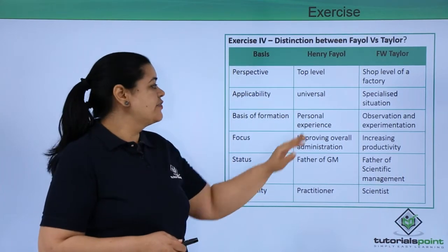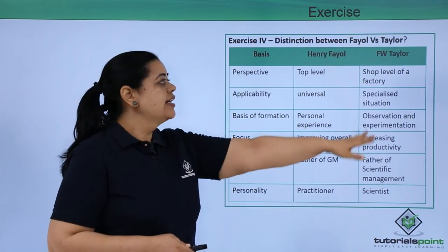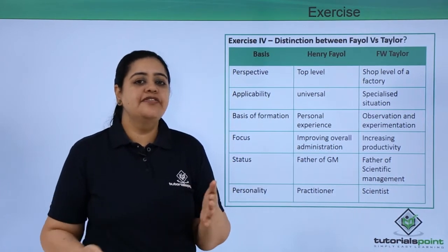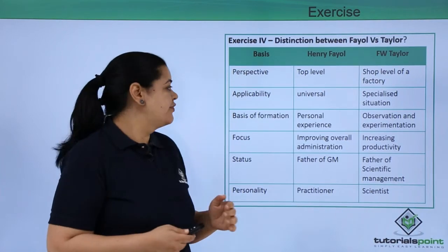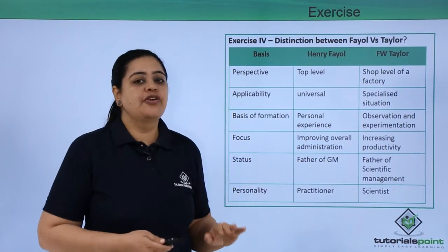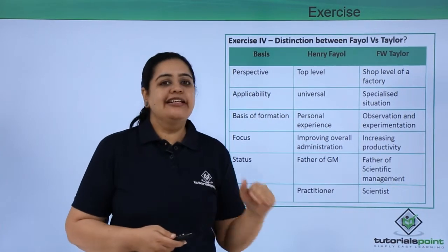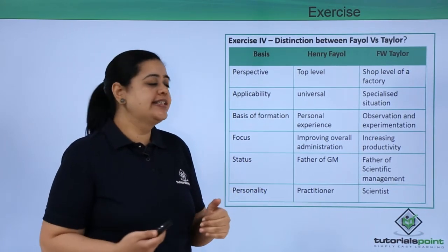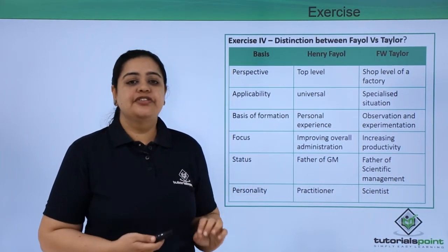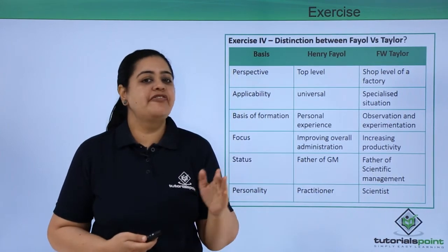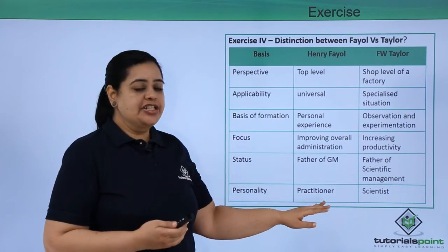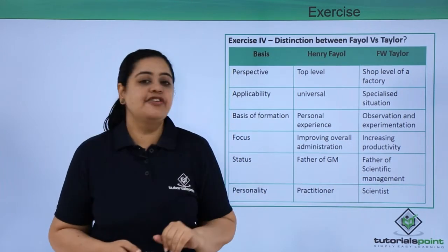What was the basis of information? For Henry Fayol, it was personal experience. For Taylor, it was observation and experimentation — he experimented and observed in his own company. In terms of focus, Fayol always focused on improving the overall administration, while Taylor focused on improving and increasing productivity. In terms of status, Fayol is the father of general management and Taylor is the father of scientific management. In terms of personality, Fayol was a practitioner, but Taylor was a scientist.